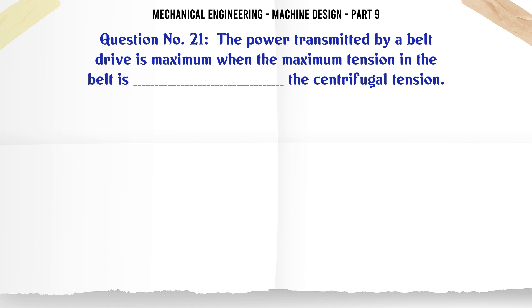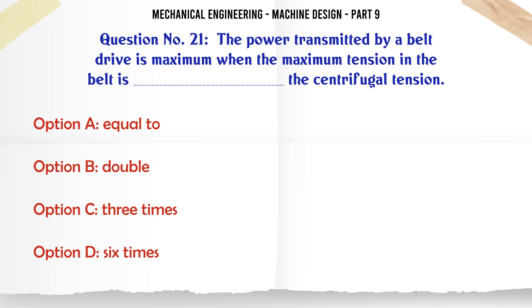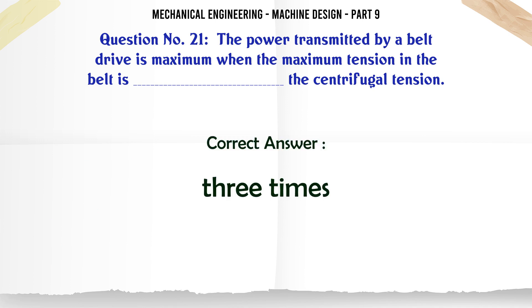The power transmitted by a belt drive is maximum when the maximum tension in the belt is the centrifugal tension: A. Equal to, B. Double, C. Three times, D. Six times. The correct answer is Three times.